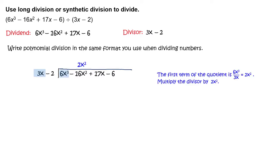The first term of the quotient is 6x cubed divided by 3x, which equals 2x squared. Multiply the divisor by 2x squared to get 6x cubed minus 4x squared. Subtract and simplify to get negative 12x squared. Bring down 17x.